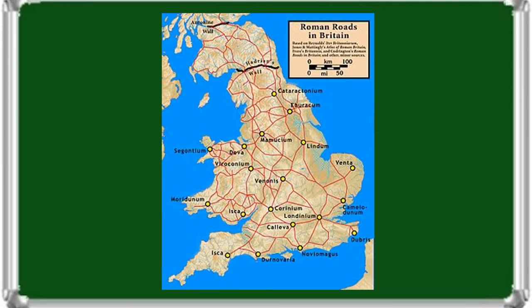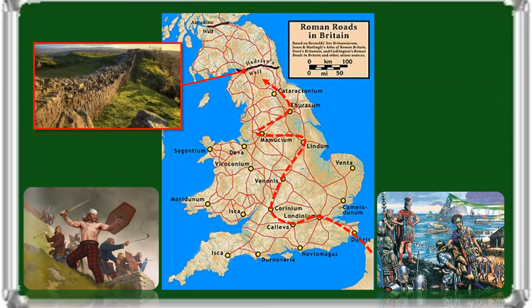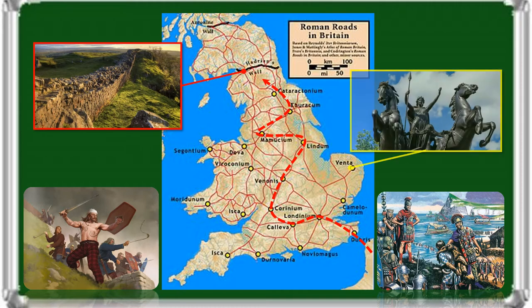The earliest known inhabitants of Britain were the Celts. The Romans began their conquest of Britain in 43 AD, and ruled southern Britain for the next 400 years. The northern border of Roman rule was Hadrian's Wall, which today divides England from Scotland. The strongest rebel against Roman occupation was Queen Boudicca of the British Celtic Iceni tribe, who led an uprising against the occupying forces of the Roman Empire in 60 AD. Although she was defeated, she is considered a British folk hero because of her stand for British liberty.